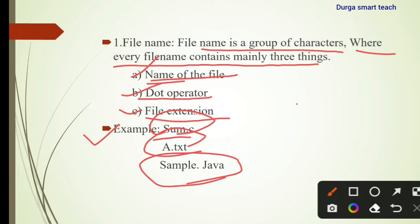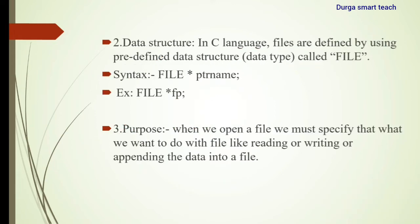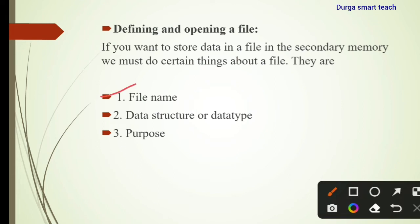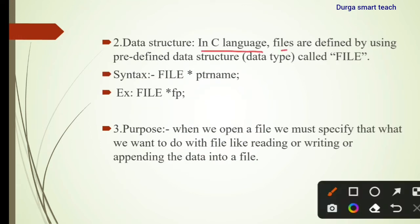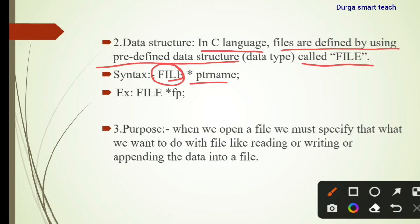Next is the data structure. In C language, files are defined using a predefined data structure called FILE. The syntax is: FILE *fp — where fp is a pointer variable which is used to store the address of another variable.